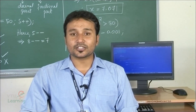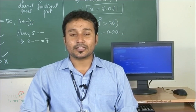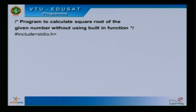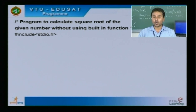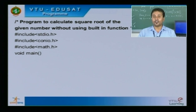After discussing the syntax of the for loop and logic of the program, let us look into the actual program to calculate the square root of a given number without using the built-in function. The very first line is hash include stdio.h, the preprocessor directive with the standard input-output header file. The next two lines are preprocessor directives with the console input-output and mathematical header files. The next line is the void main function, from which program execution starts.